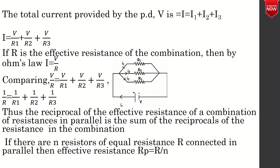The reciprocal of the effective resistance of a combination of resistors in parallel is the sum of reciprocals of the individual resistances. If there are N resistors of equal resistance R connected in parallel, then the effective resistance Rp = R/N.